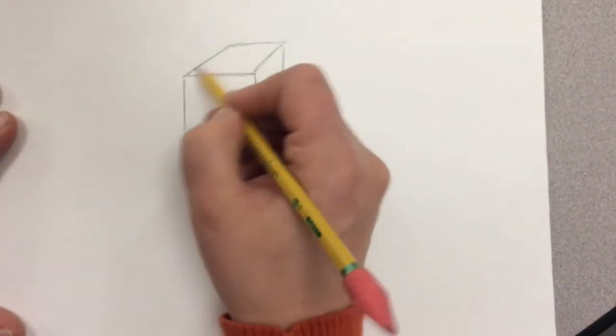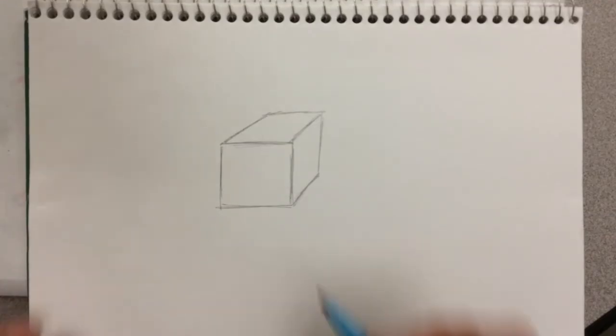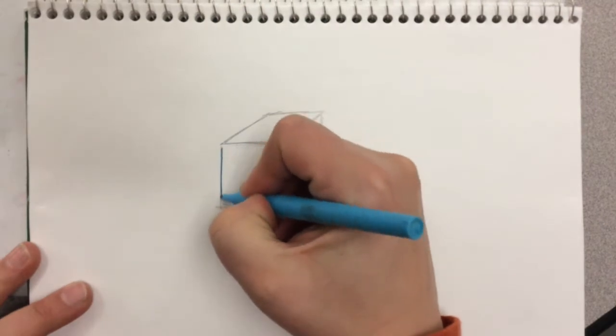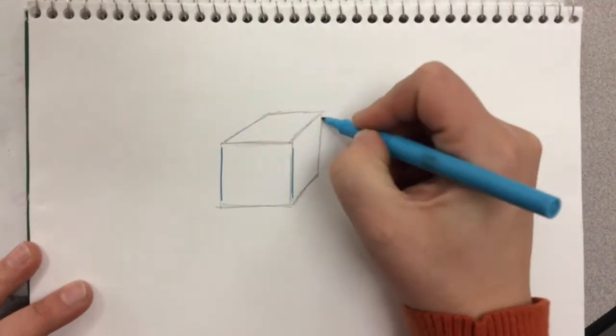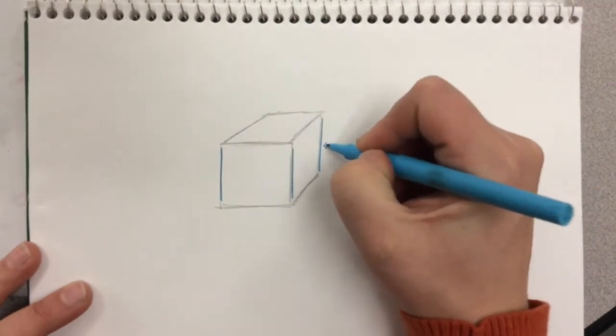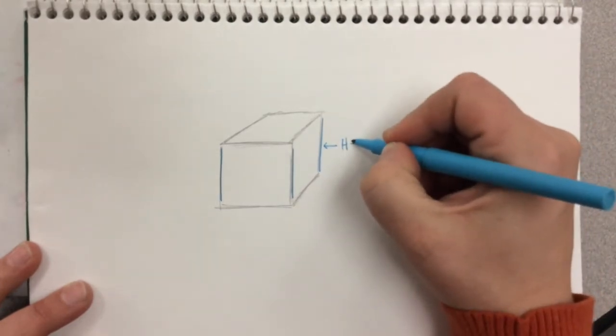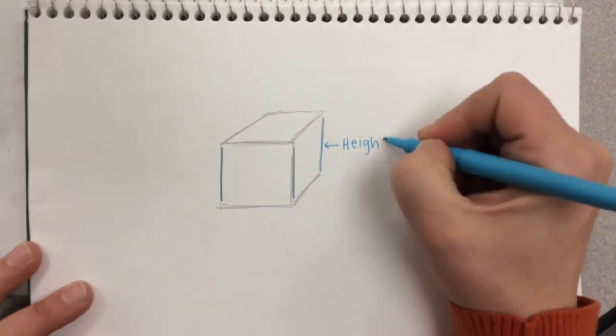First of all, I am going to highlight three of the vertical lines on this cube to illustrate that these lines will represent the height of our cube. So I'm doing this in blue.